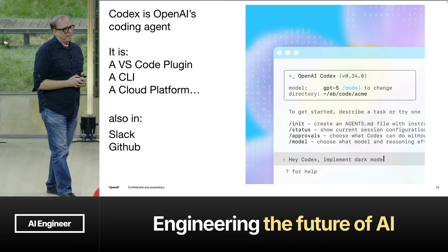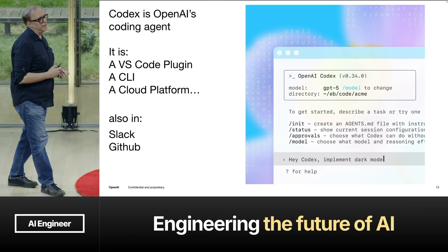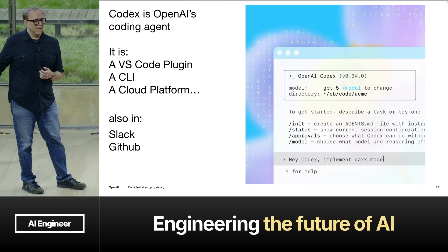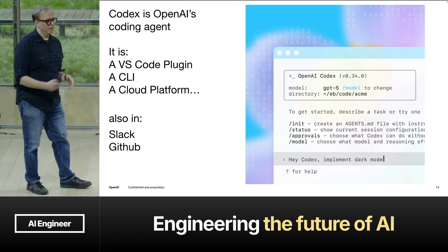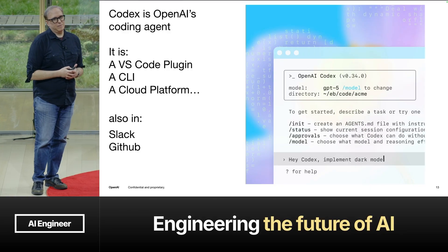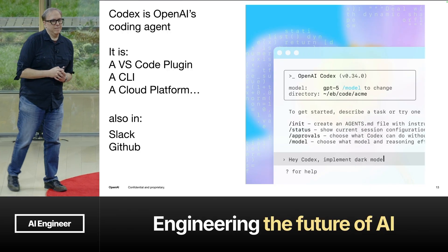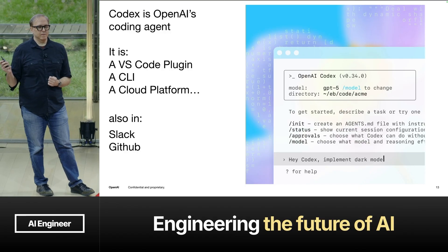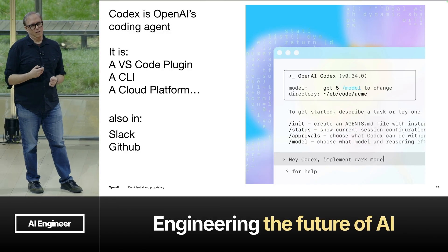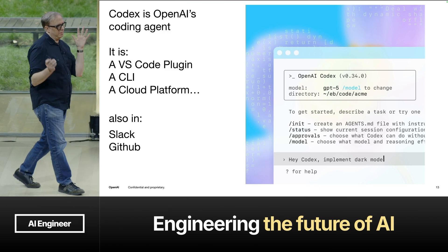We built Codex to be an agent for everywhere that you code. It's a VS Code plugin, it's a CLI. You can call it in the cloud from the VS Code plugin or from ChatGPT from your phone. You can use it to turn your specs into runnable code starting from a prompt and having a plan. It navigates your repo to edit files, runs commands, executes tasks, and you can call it from Slack or have it review PRs in GitHub — all of the things that you would expect.